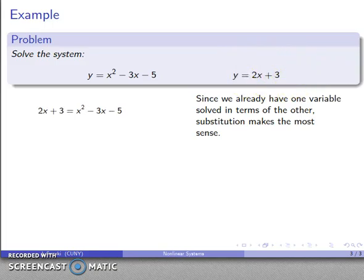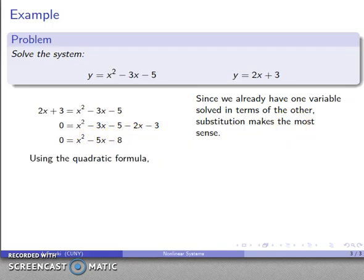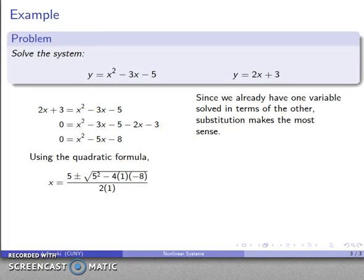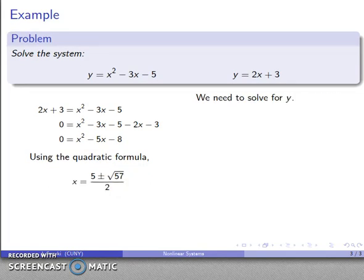So I'll do that substitution and I end up with a quadratic equation. And so now I can solve this quadratic equation like I've solved every other quadratic equation. I'll get everything over to one side. I have this nice quadratic equation, x squared minus 5x minus 8. And I'll drop that into the quadratic formula. So I drop that into the quadratic formula, I do a little bit of arithmetic and simplify.